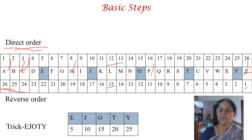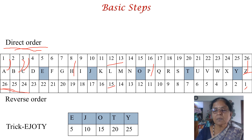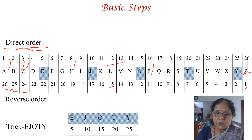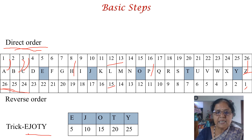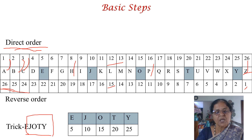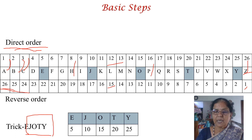Keep that point in memory because it may be used in solving some problems later on. It is not possible to remember every alphabet's number, but it is easy to remember the word EJOTY — E-J-O-T-Y. E corresponds to 5, J to 10, O to 15, T to 20, and Y to 25. So it is 5 and multiples of 5.